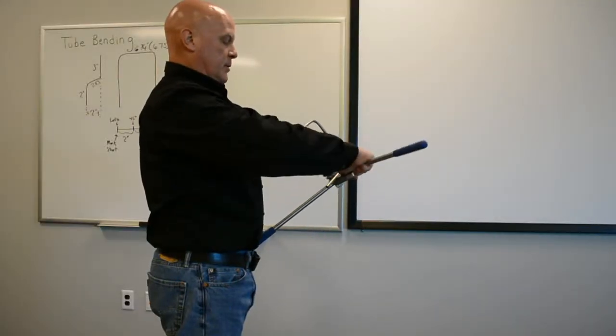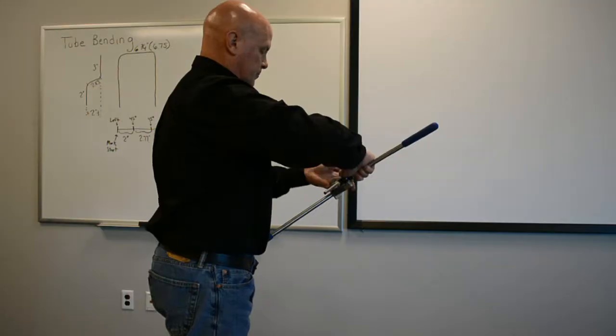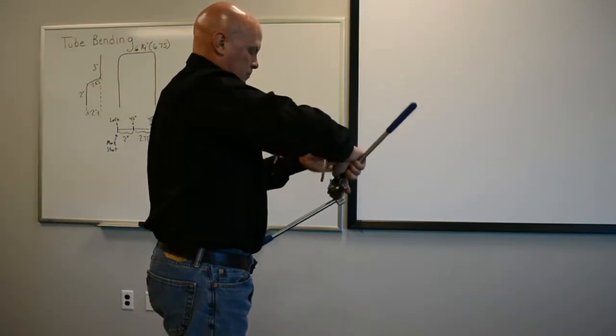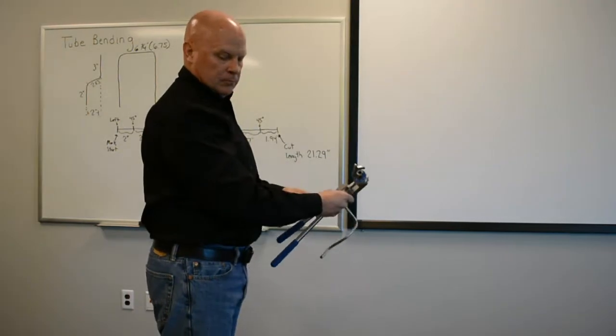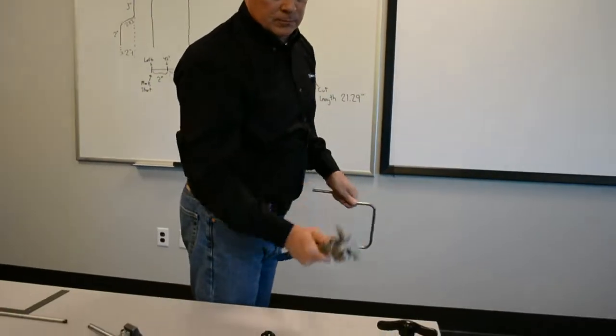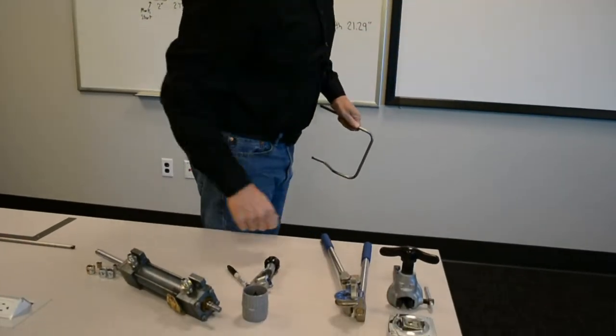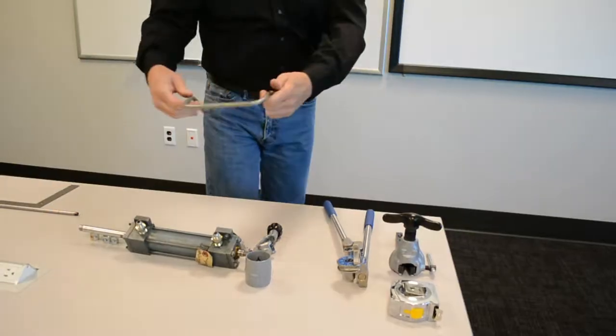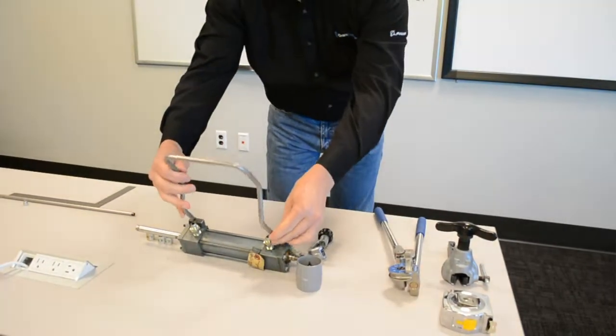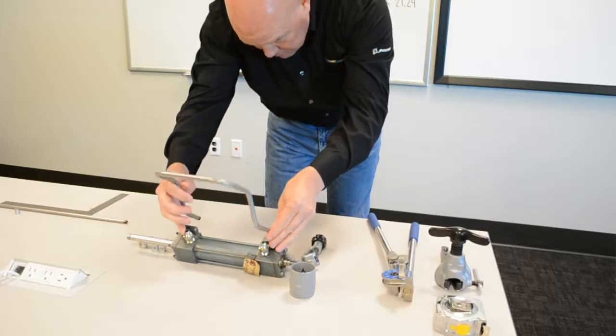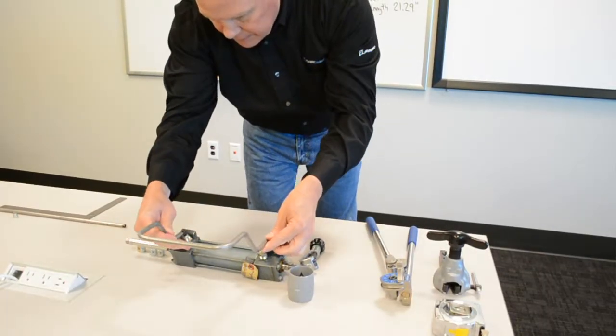Now we take it out of the bender. We're going to see how it looks on the fixture and make sure that our last, where we thought we should cut, is actually where we should cut. You kind of align it on there.